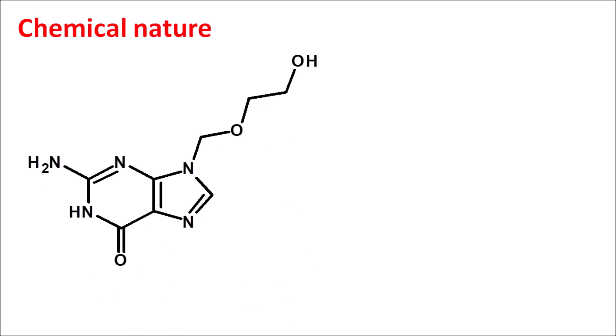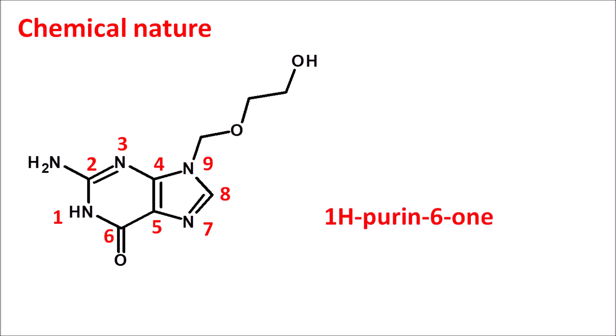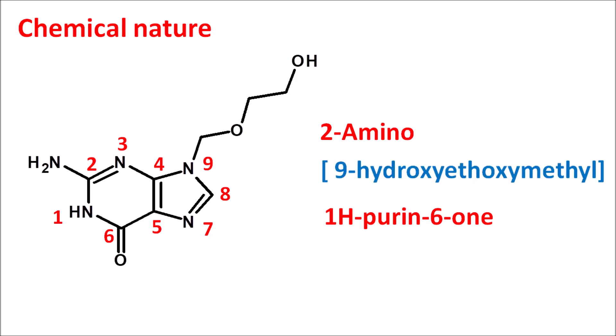Now let us look at the chemical nature of this drug. In the structure of acyclovir, we can observe the purine ring system. Numbering the positions: 1, 2, 3, 4, 5, 6, 7, 8, 9 — this is the purine ring system with a sixth-position ketone group, so we can write this as 1H-purin-6-one. The second position has an amine group: 2-amino. At the ninth position it has an acyclic chain — so we write the chain at the ninth position as 9-(2-hydroxyethoxymethyl), which forms the complete name of acyclovir.